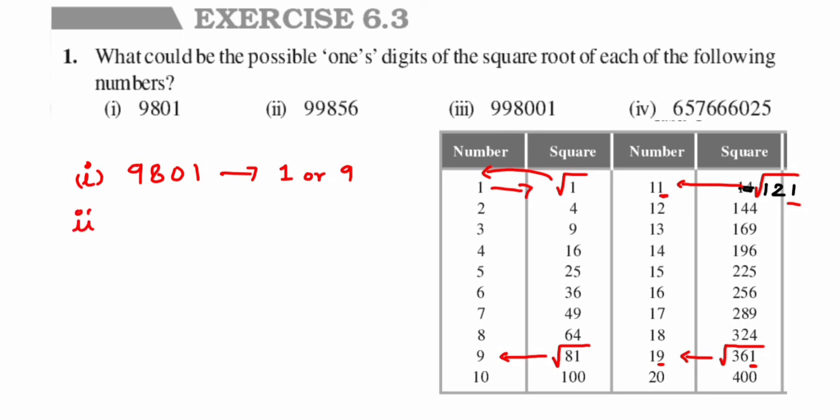In the second one, we have 99856, so we are having a 6 here. This perfect square has a 6 at the end, so again we'll check here. 16—if I take a square root of 16, I'll get 4. We have 36. If I take a square root of 36, I'll get 6. Similarly, we have 256 here, 6 at the end. If I take a square root of 256, I'll get 16, that is 6 again at the end.